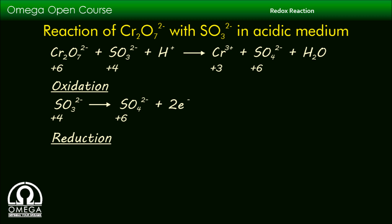In the reduction half, the oxidation number of Cr atom which is +6 in Cr2O7^2- decreases to +3 when it is converted into Cr^3+ ion. Now there are two chromium atoms in dichromate ion.